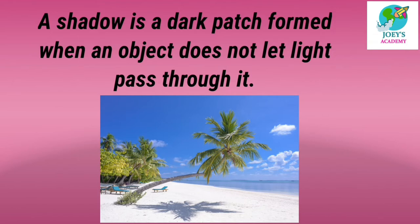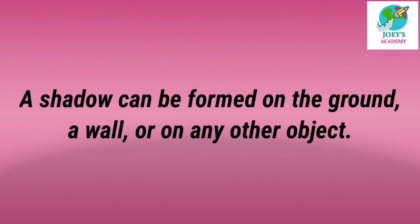A shadow is a dark patch formed when an object does not let light pass through it. Shadow dark patch होता है, और ये कब form होता है? जब भी कोई object के through light pass नहीं होती तभी shadow बनती है. A shadow can form on the ground, a wall, or any other object. Shadow कहां पर form होती है? ये जमीन पर, दीवार, या किसी भी object जैसे bed, chair, table — कोई भी object हो, वहाँ shadow form होती है.